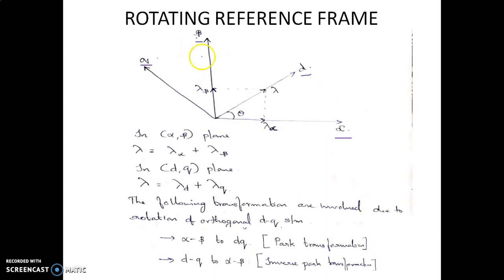In the last class, we discussed a rotating reference frame. This is a RYB to Alpha-Beta conversion. Alpha and Beta are a stationary reference frame — they were not rotating. Now we are going to study these axes and reference frames. The reference frame that is rotating has an angular velocity. Alpha and Beta represent the three-phase RYB quantity as a two-phase quantity in a stationary reference frame.